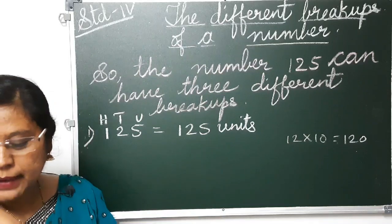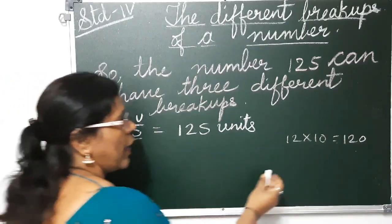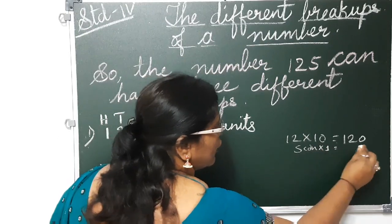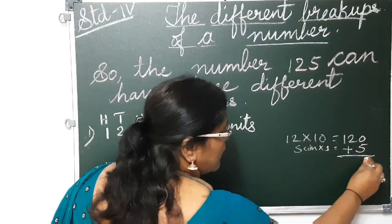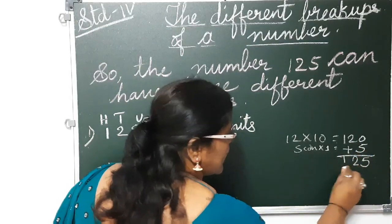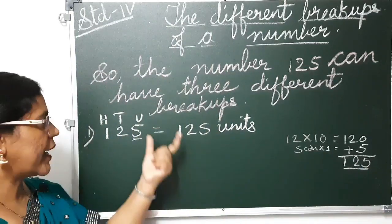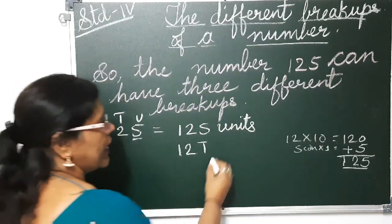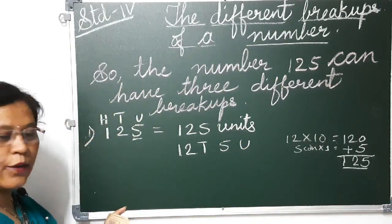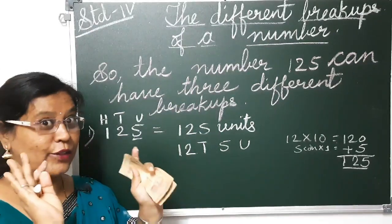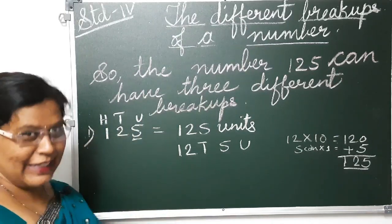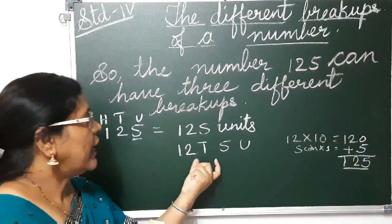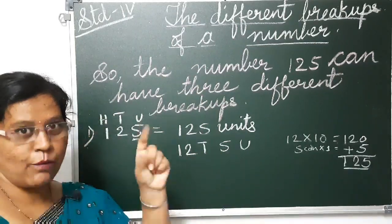5 rupee coins into 1 is equal to 5. When you add this: 0 plus 5 is 5, bring 2 down, bring 1 down — so it is 125. So the next break up will be like 12 tens and 5 units. I am not having all 125 units — that means 125 coins at present. But I am having 12 ten-rupee notes. So 12 tens and 5 units makes one more break up of 125.